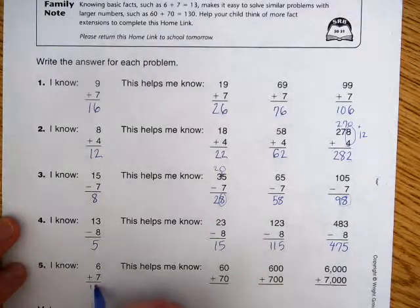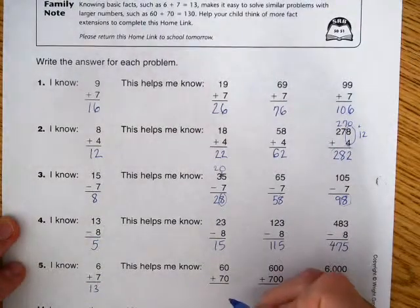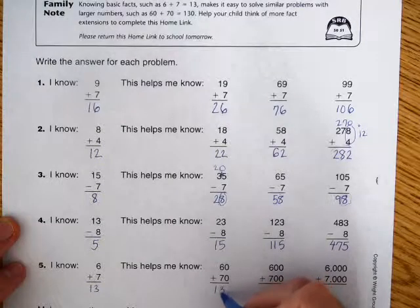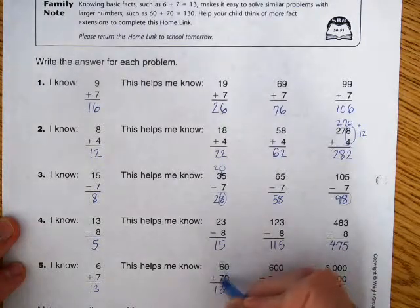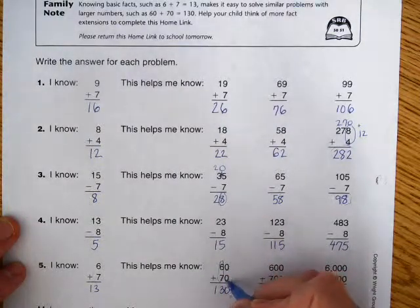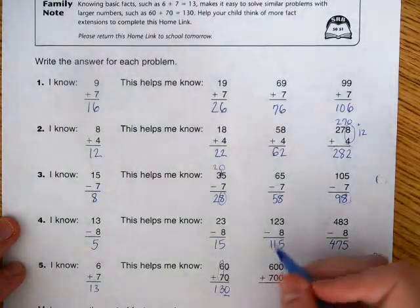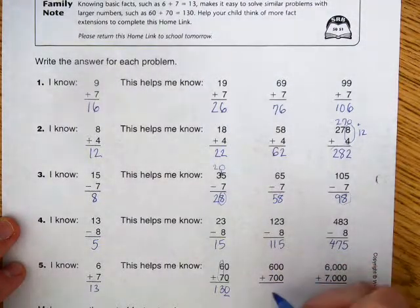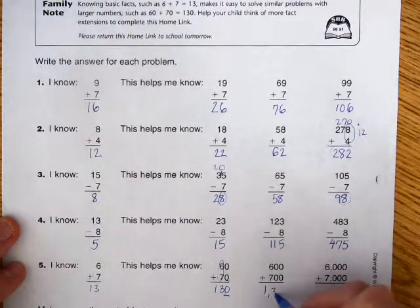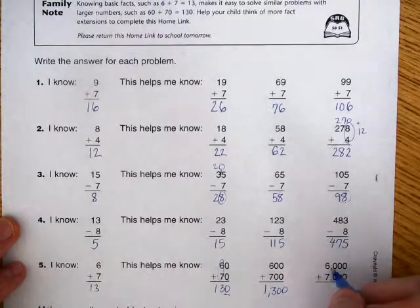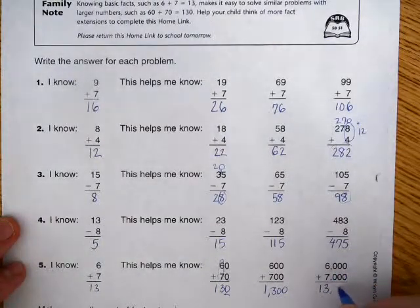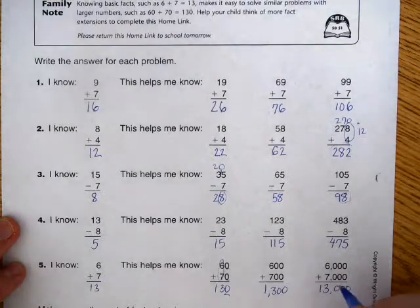I know that 6 plus 7 equals 13, so 60 plus 70 equals 130. So you add the 6 plus 7, and there's one zero on each, so you put one zero on the answer. 600 plus 700 equals 1,300, and 6,000 plus 7,000 equals 13,000.